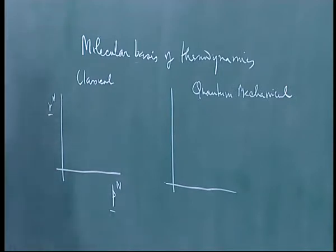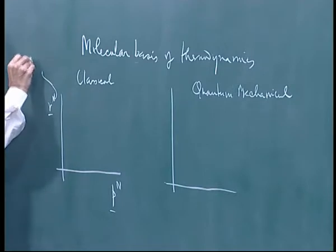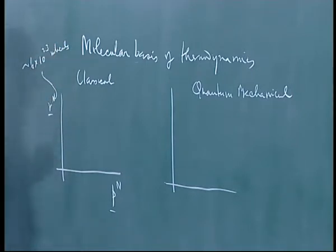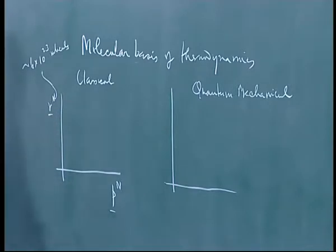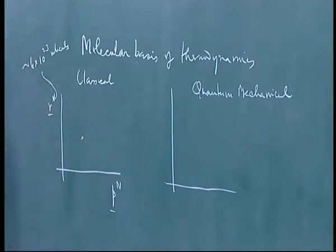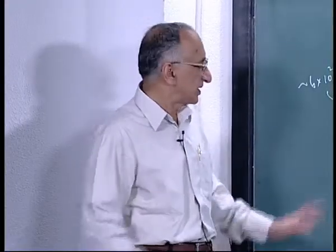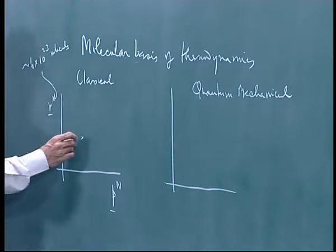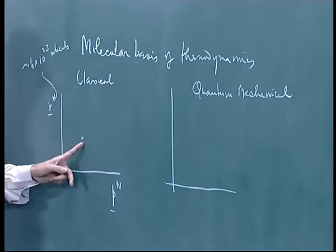If I have 10²³ particles — take a mole of the substance — you are talking of Avogadro's number of molecules, so this is of the order of 6×10²³ molecules. Let us say one mole of the substance; then I have that many molecules. I am putting down positions, the physical position XYZ for each of these and the momenta PX, PY, PZ for each of these particles. Then one point here represents the state of the system. If I could locate a point in this 6×10²³-dimensional space, I would have located the state of a system.